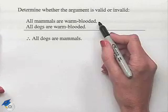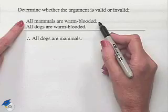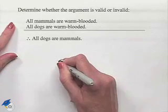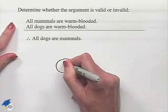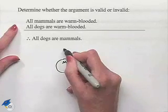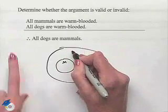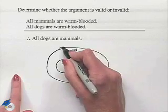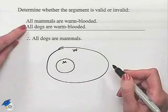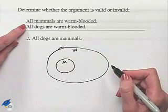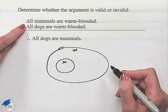We'll begin with our first premise: all mammals are warm-blooded. We'll take a circle indicating mammals and enclose it in another circle for things that are warm-blooded. Our second premise: all dogs are warm-blooded. Now what we'll know from here...